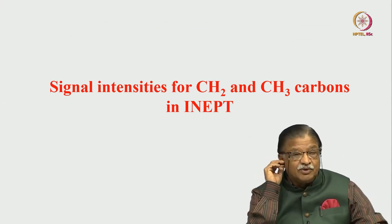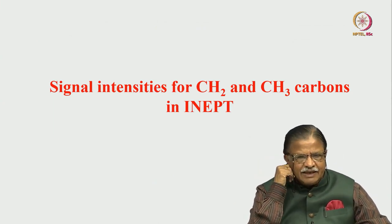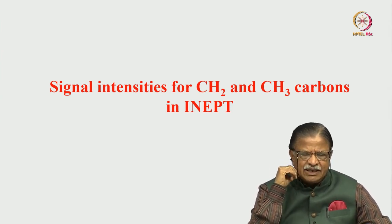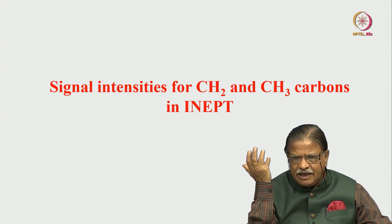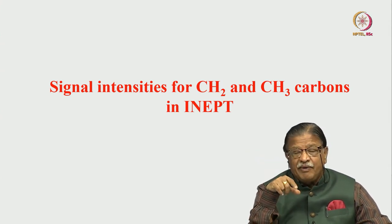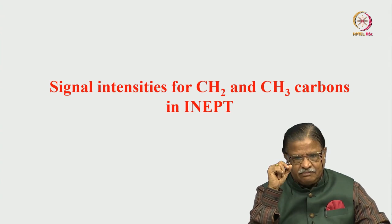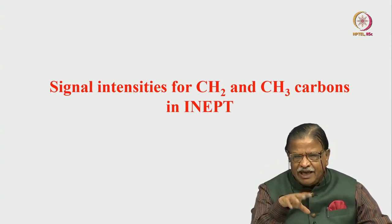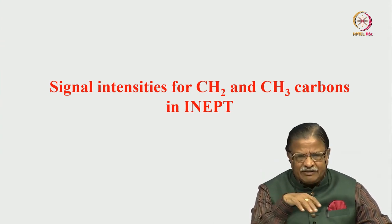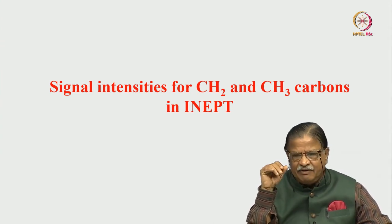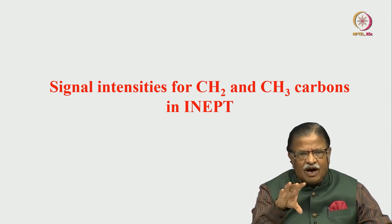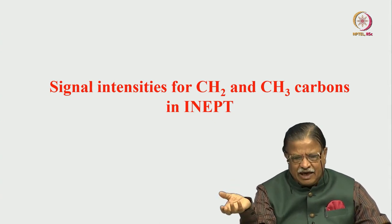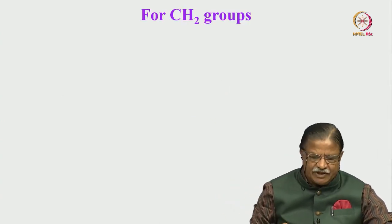Now, some interesting things happen. What will happen to signal intensities for CH2, CH3, etc., in the INEPT experiment? So far we have been dealing only with CH carbon — carbon-13 coupled to a single proton gives a doublet. We got minus 3, plus 5 signal intensities, all antiphase. We knew how to convert this by giving a delay, and afterwards it converts to in-phase, enabling decoupling.